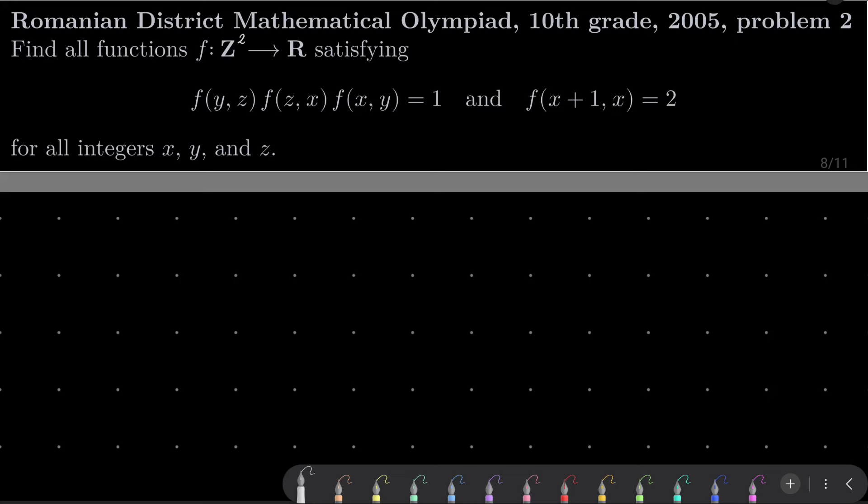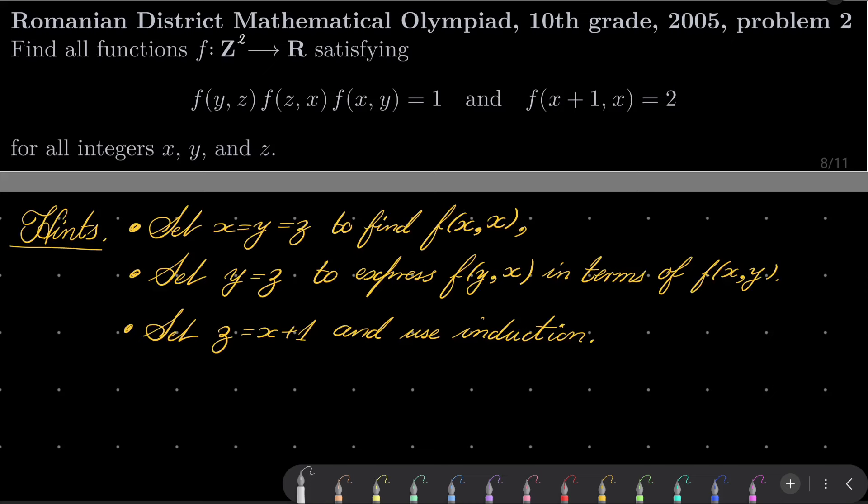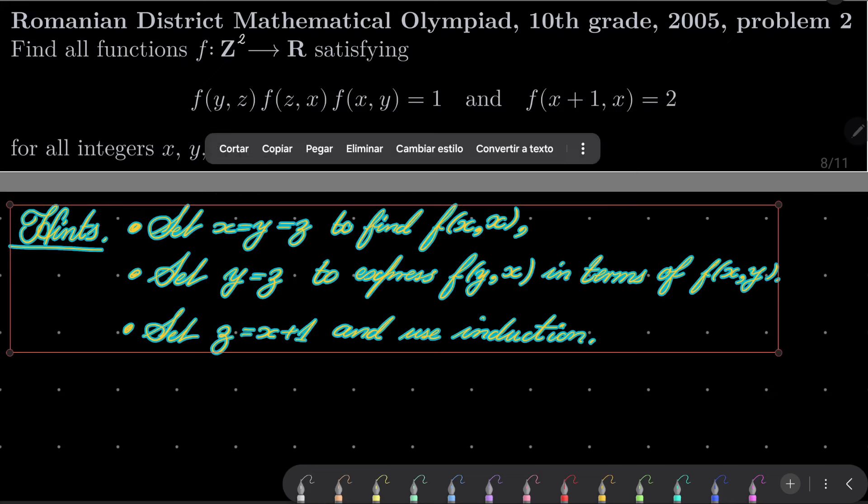So here are my hints for this problem. First, set x, y and z to be the same to find f(x,x). Then set y to be z and express f(y,x) in terms of f(x,y). It should be possible. And finally, set z to be x plus 1 and use induction to get to the formula. Actually, you may wish to use induction twice in the process. We'll give this problem a try and I will see you in just a minute.